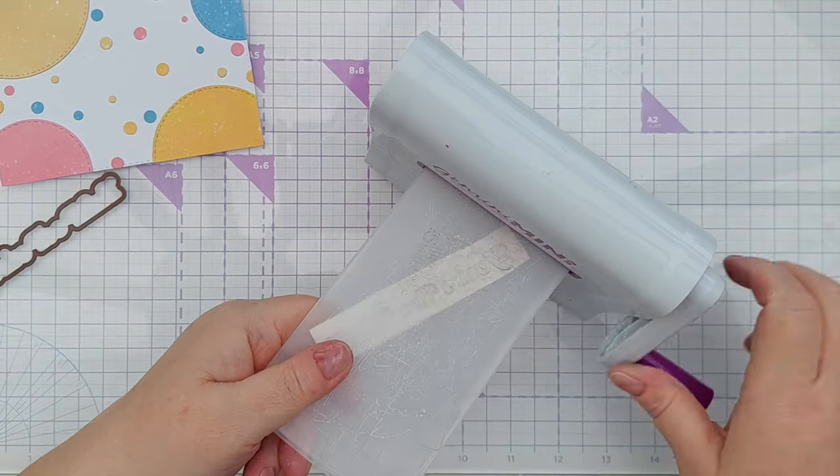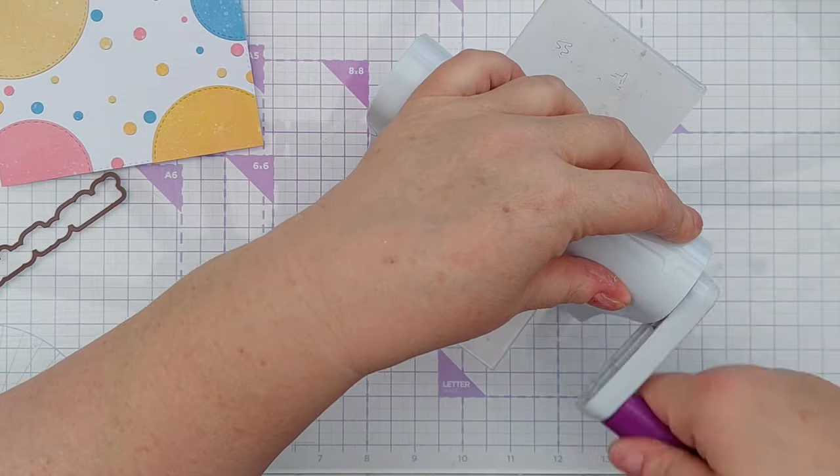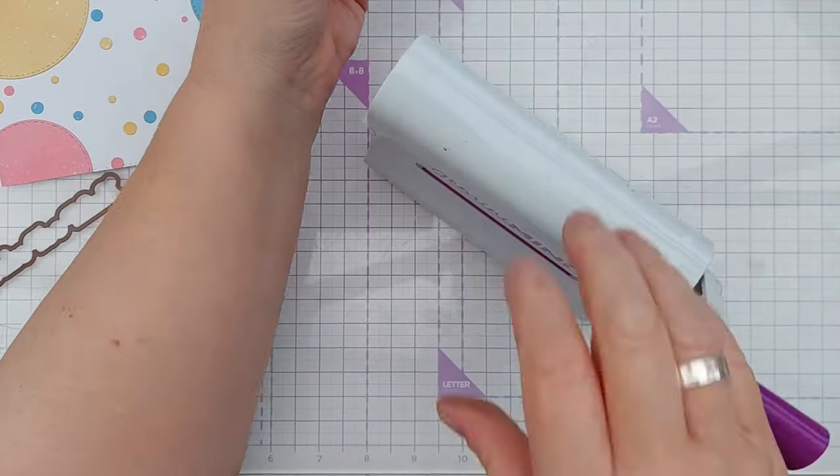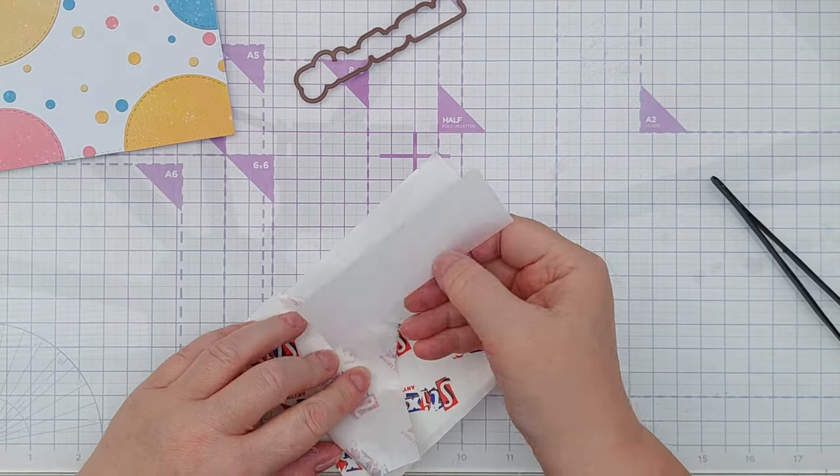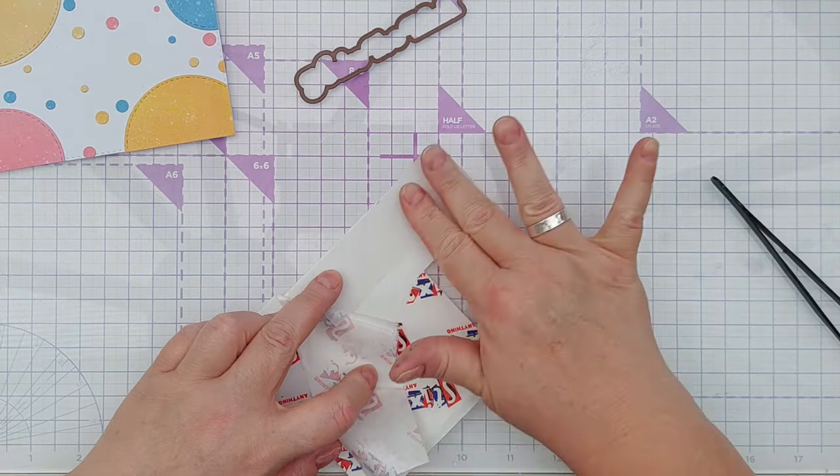For the shadow I decided to use some vellum, but before I die cut it I put the vellum on some double-sided sticky so that it would stick down to my card front without any of the adhesive showing through.